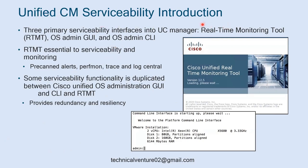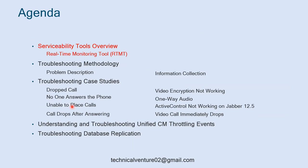For Unified CM serviceability, there are three primary interfaces into Call Manager: the Real-Time Monitoring Tool, the OS Admin GUI, and the OS Admin CLI. RTMT is essential to serviceability and monitoring. Things you can do in RTMT include: pre-canned alerts, perfmon, trace and log central, alert center, syslog viewer, and audit log viewer.